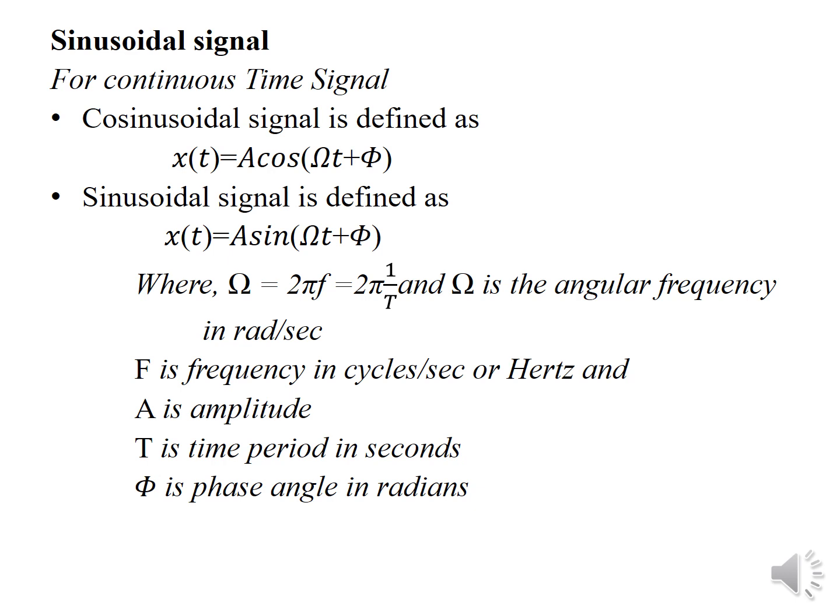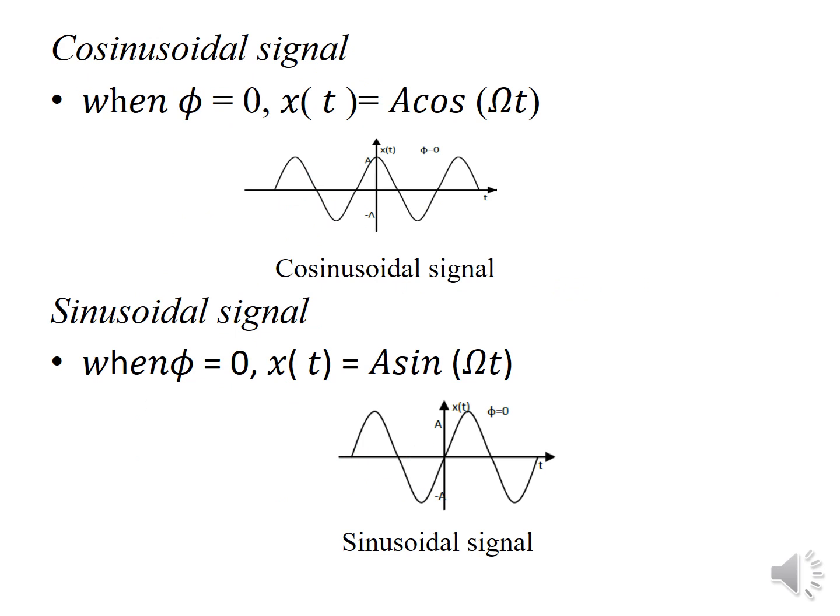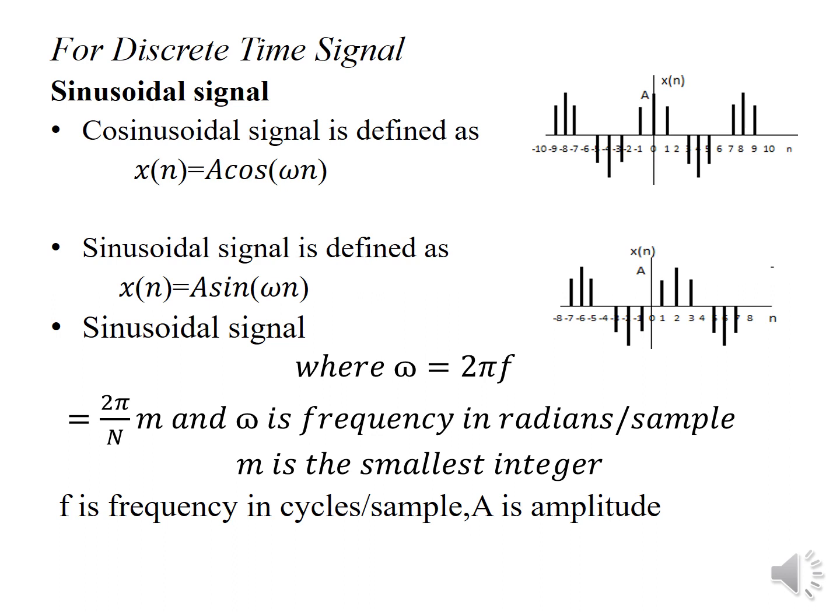Sinusoidal signal: for continuous time, the cosine signal is defined as x(t) = A cos(ωt + φ) and the sine signal is defined as x(t) = A sin(ωt + φ), where ω = 2π/T = 2πf. Here ω is the angular frequency in radians per second, f is the frequency in cycles per second, A is the amplitude, T is the time period in seconds, and φ is the phase in radians. When φ = 0, x(t) = A cos(ωt) for the cosine signal and x(t) = A sin(ωt) for the sine signal.